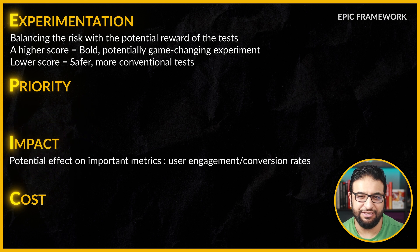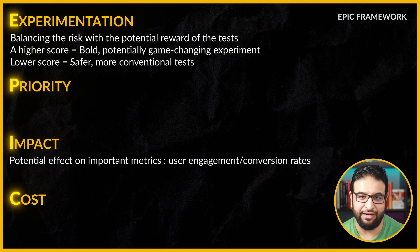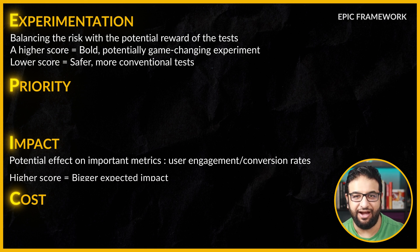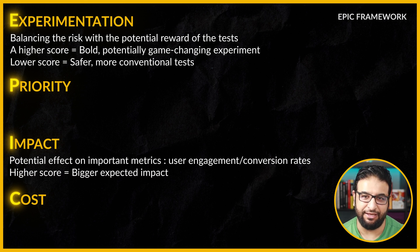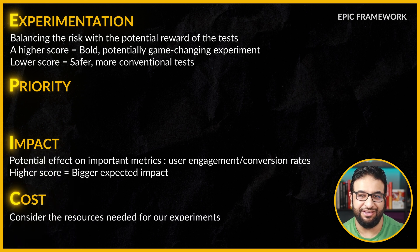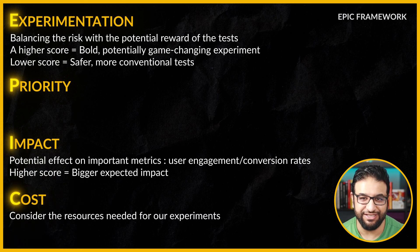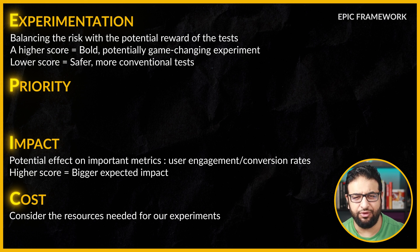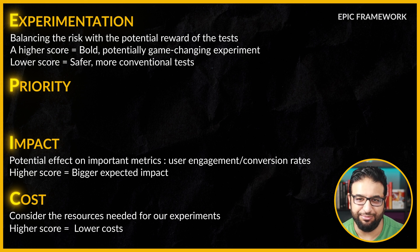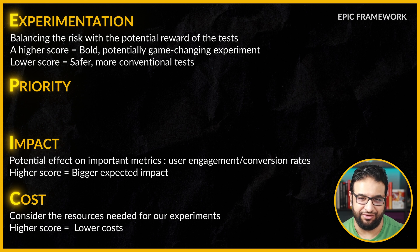Next, we have impact. This measures the potential effect our experiment could have on important metrics like user engagement or conversion rates — the higher the score, the bigger the expected impact. Then there's cost. Here we consider the resources needed for our experiments, but there's a twist: we score this inversely. A high score means lower costs, making the experiment more appealing to prioritize.